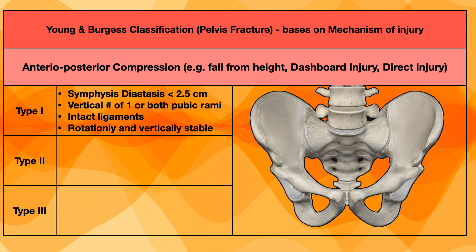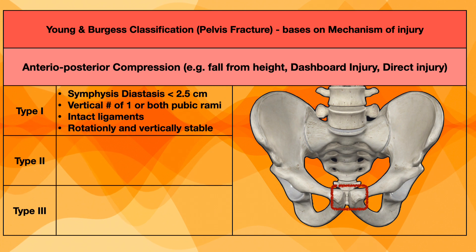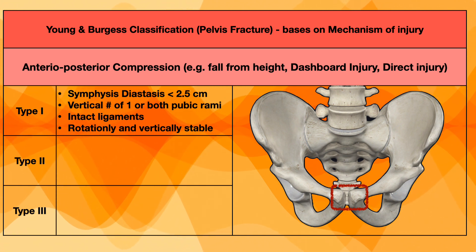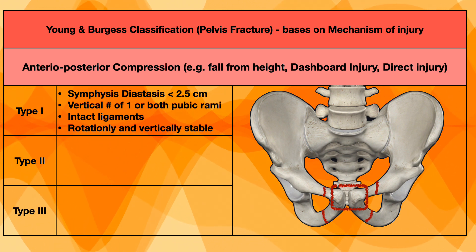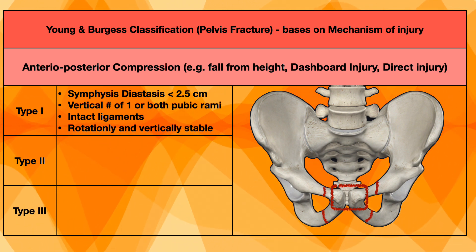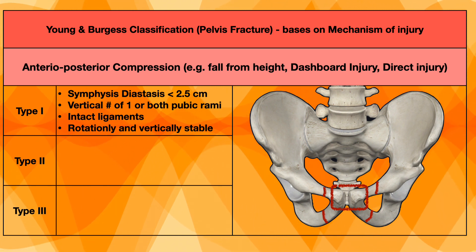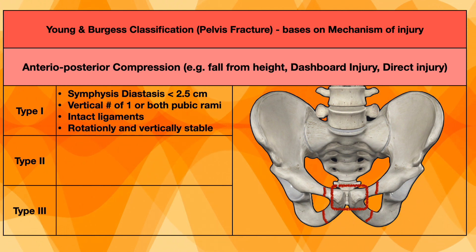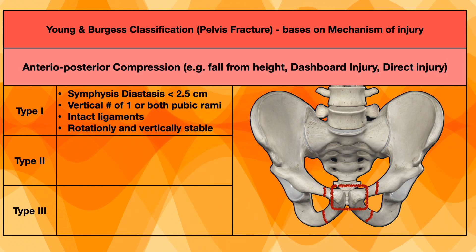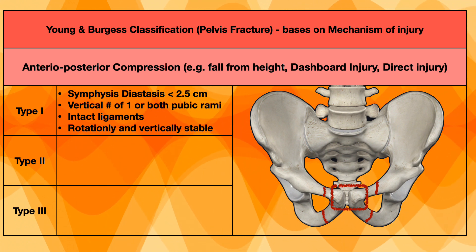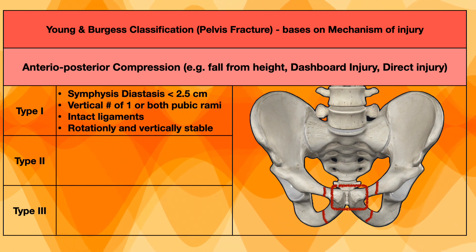In anteroposterior compression type 1, there will be symphysis diastasis of less than 2.5 cm. There can be a vertical fracture of one or both pubic rami, and the posterior ligaments in type 1 will be intact. If we imagine the weight-bearing axis, it is intact and normal. So it is vertically stable, and because the sacroiliac ligaments and the joint are normal, we can say this is also rotationally stable.